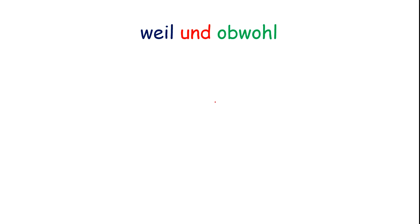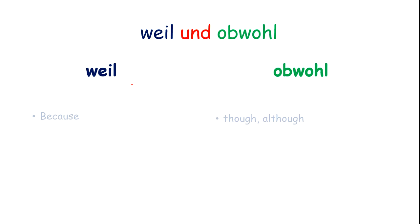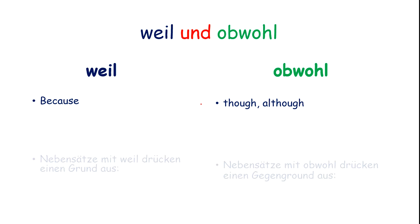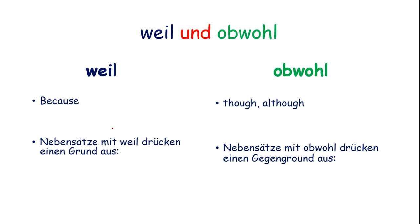Now we see the difference between these two. Weil, obwohl. Because, though, although. Weil drückt einen Grund aus — reason. Obwohl drückt einen Gegengrund aus — opposite reason.